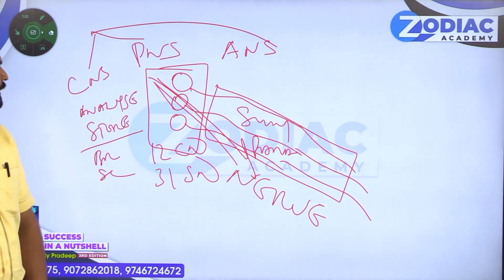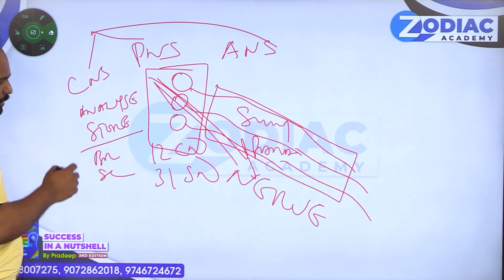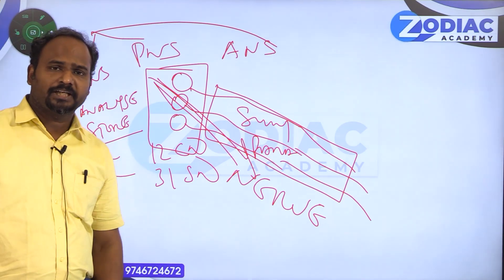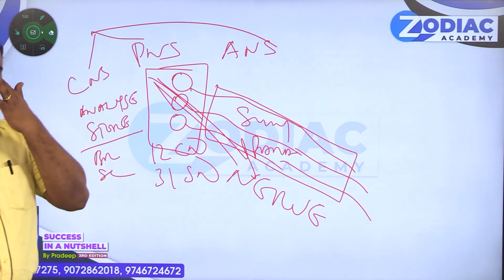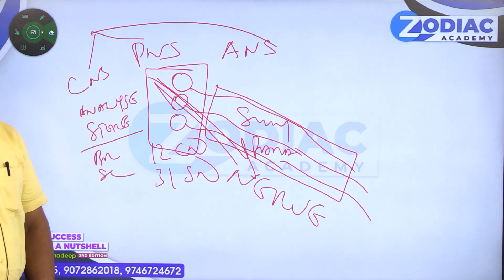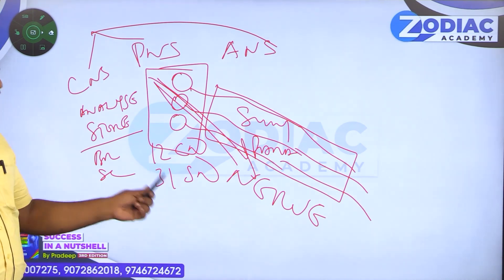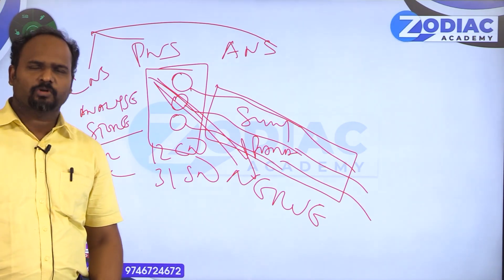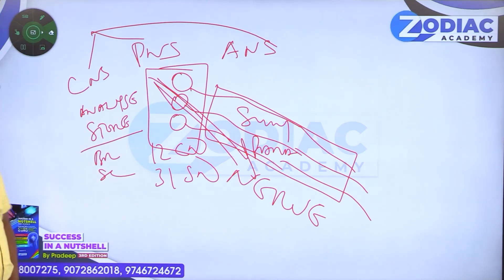The 12 pairs of cranial nerves are: olfactory, optic, oculomotor, trochlear, trigeminal, abducent, facial, vestibulocochlear, glossopharyngeal, vagus, accessory, and hypoglossal. The 31 pairs of spinal nerves are: cervical 8, thoracic 12, lumbar 5, sacral 5, and coccygeal 1.